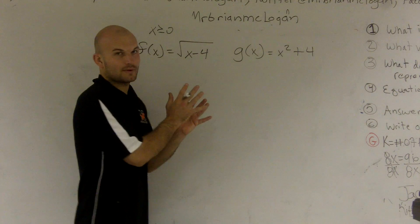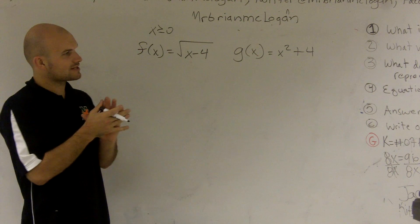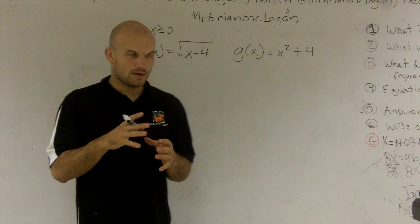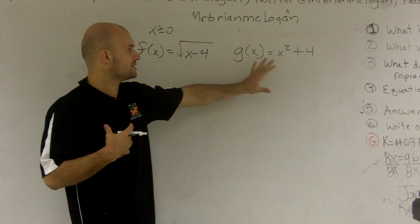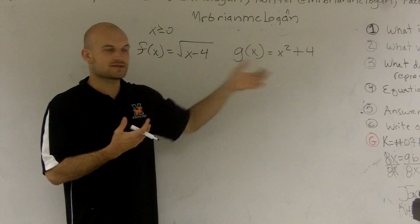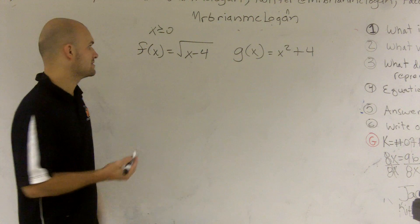All right, what we're going to do is we want to show that f of x and g of x are going to be inverse functions. So what we're going to have to show is that when we do the composition of a function and its inverse, what we're going to get out is going to be x.